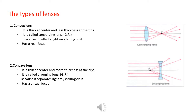Do you remember what is meant by focus? Focus is a point of collecting the refracted light rays. Second, the concave lens. It is thick at the edges and more thick at the tips. It is called a diverging lens because it separates the light rays falling on it and has a virtual focus. The focus is a point of collecting the extensions of refracted rays.